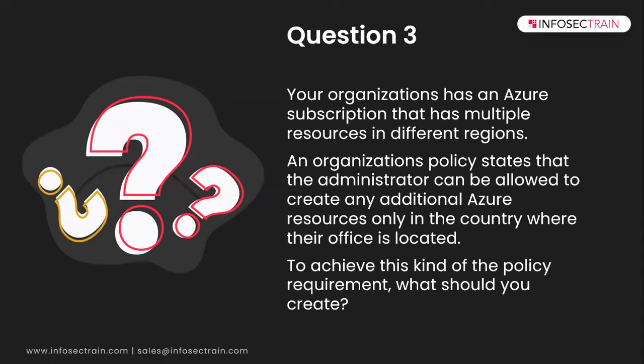To understand this question, think of it this way: if your offices are located in different locations — one office is in London, one is in Boston, and one is in Cape Town — your organization wants you to only be allowed to create resources in the countries where your offices are located. So if your office is in Boston, you should only be allowed to create resources in the US. If your office is in London, you should be allowed to create resources in the UK. And if you are in Cape Town, you should be allowed to create resources in the South African region.